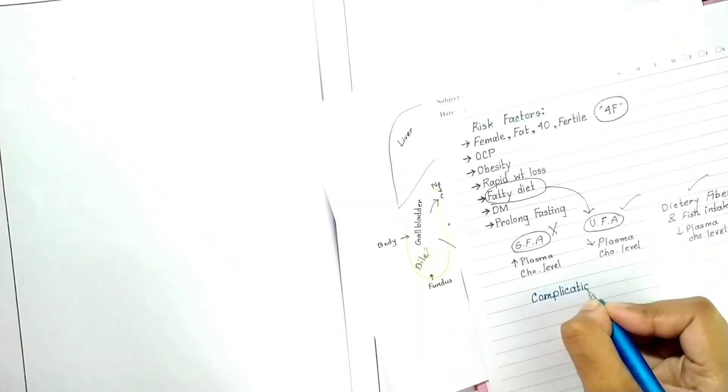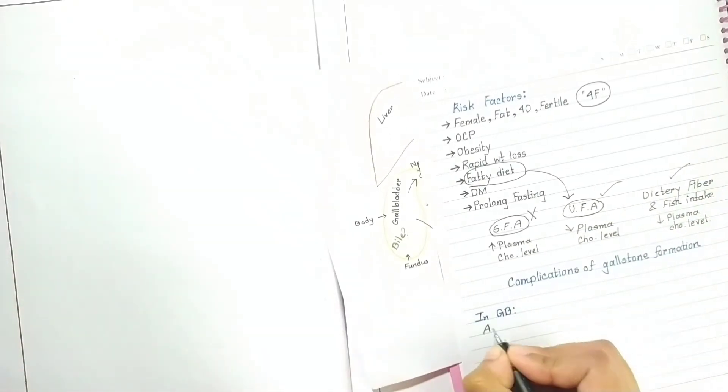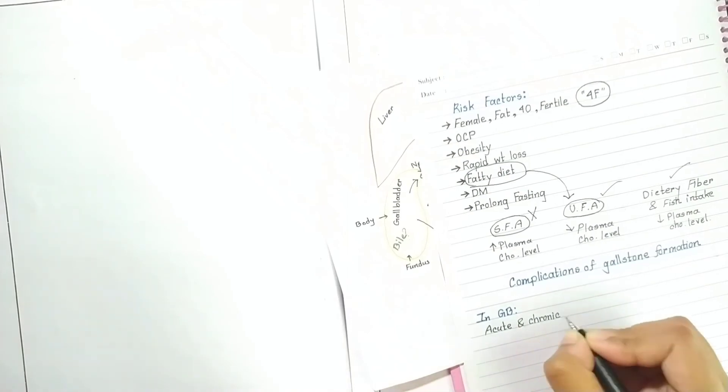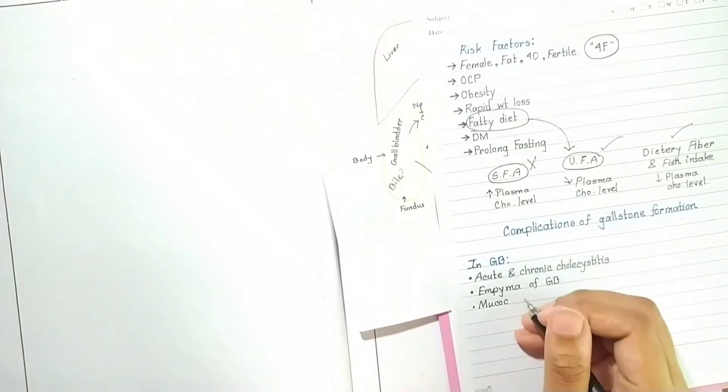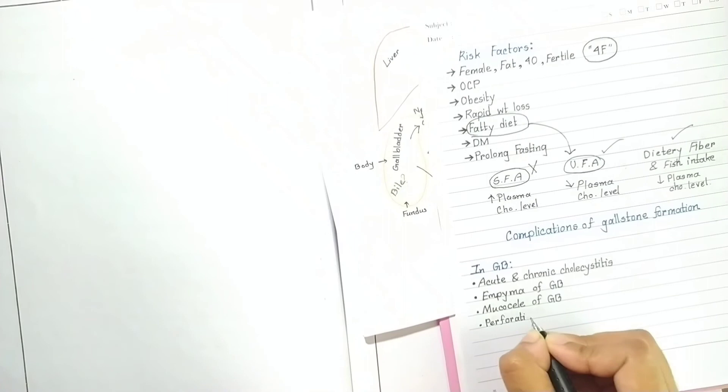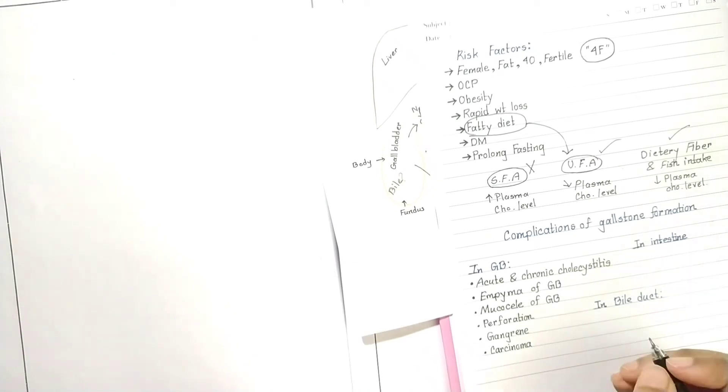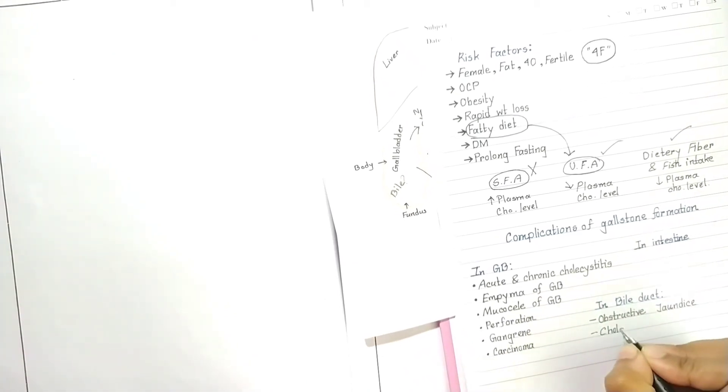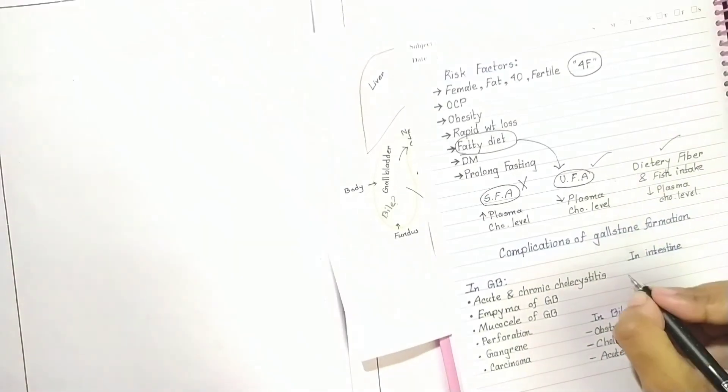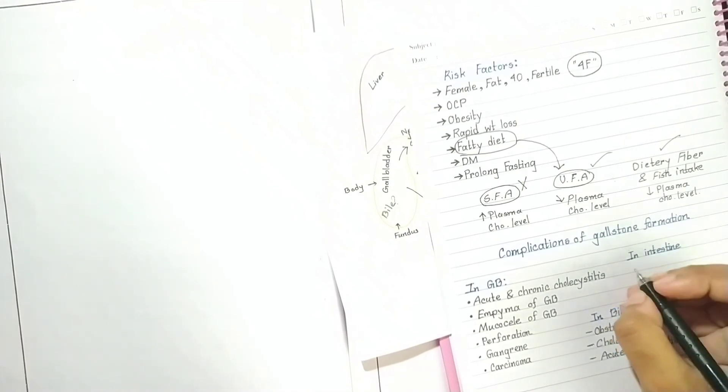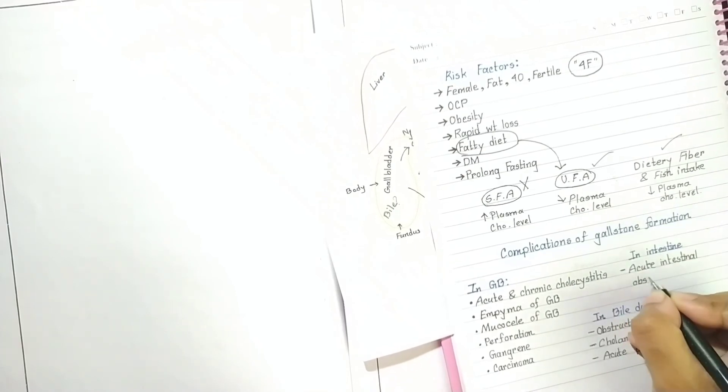Complications of gallstone formation: in gallbladder, it may cause acute and chronic cholecystitis. In the bile duct, it may cause acute pancreatitis. As small intestine is the continuation of duodenum, it also causes complications in intestine like acute intestinal obstruction.